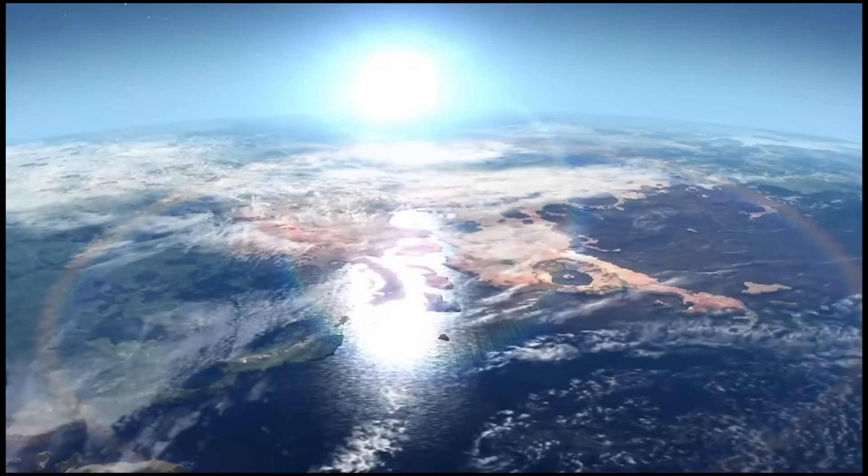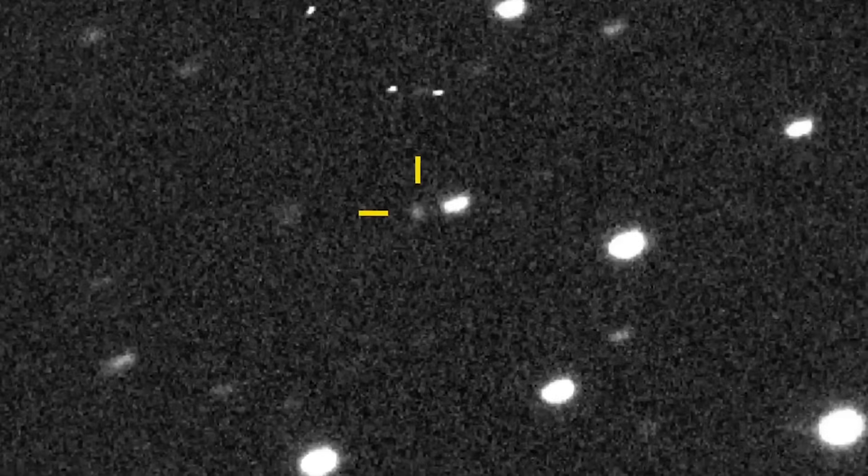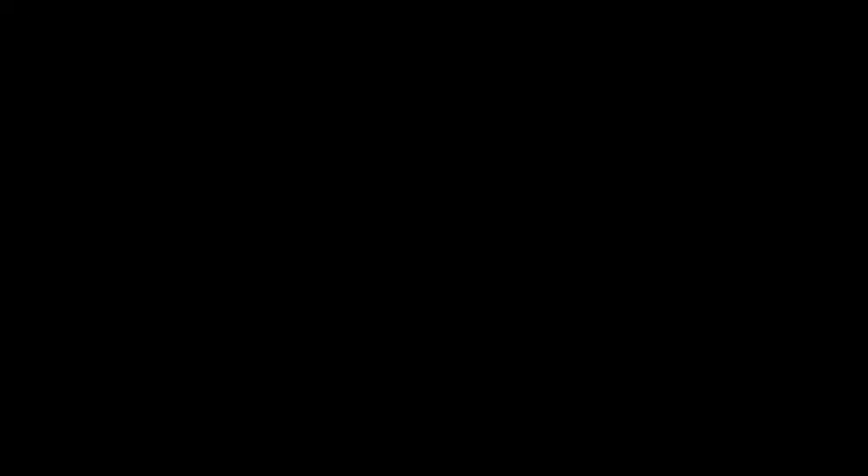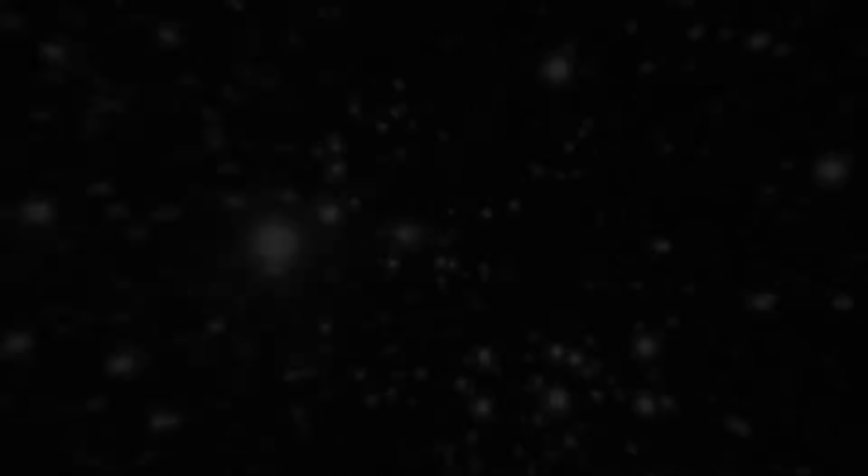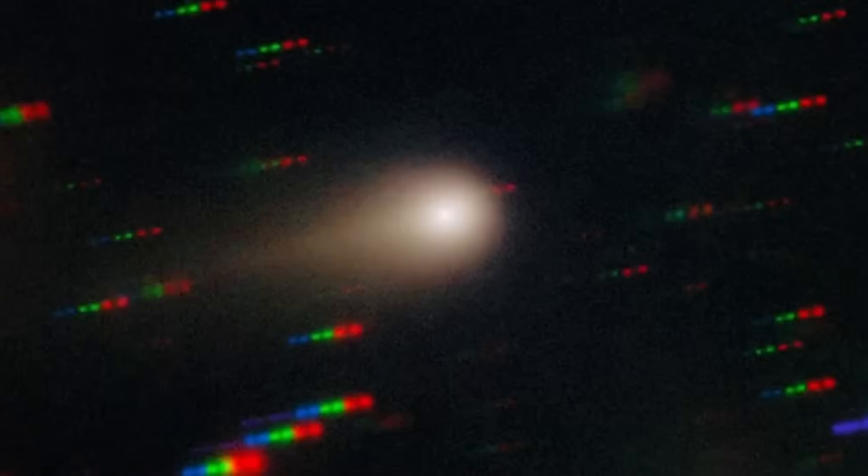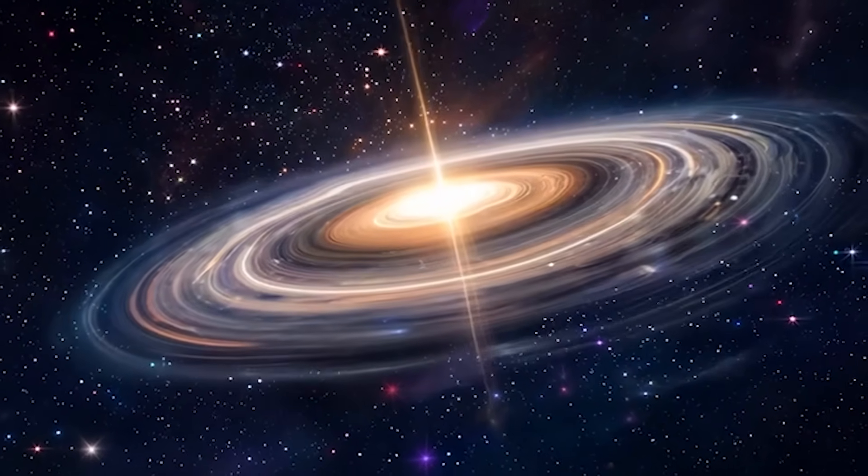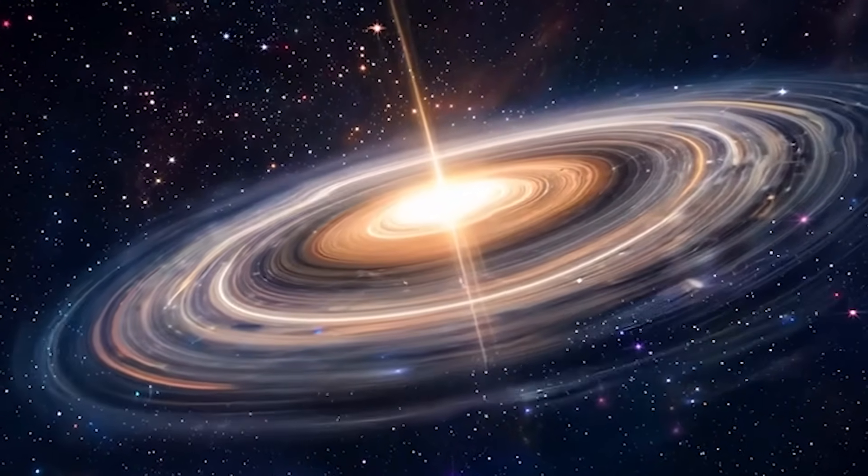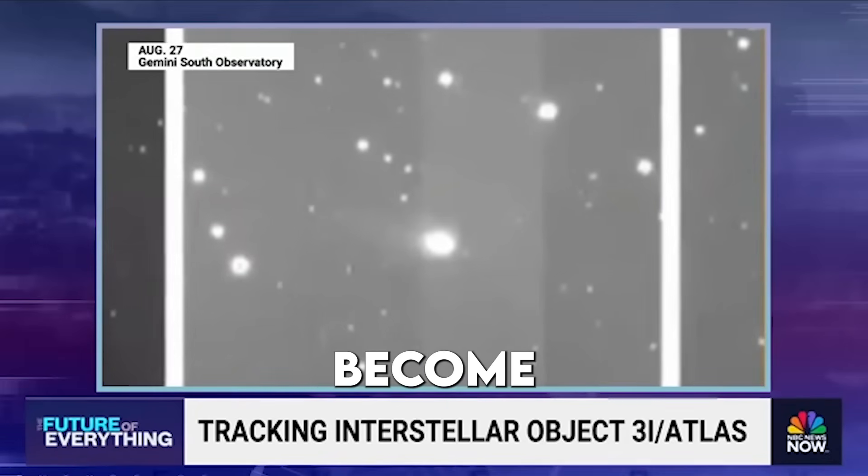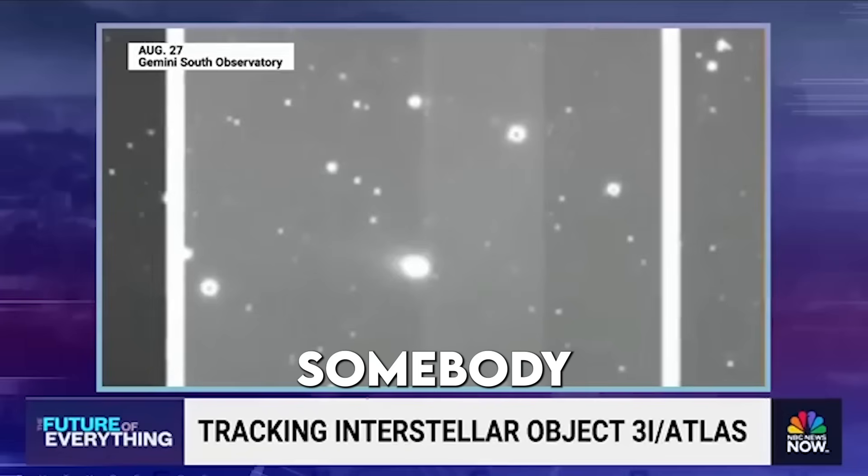Scientists are now talking about rapid-response spacecraft designed to intercept interstellar objects. 3I/ATLAS proves it's possible. With early detection, humanity could one day launch missions before an object arrives, sampling material directly from another star system. This is a building block from somebody else's home.